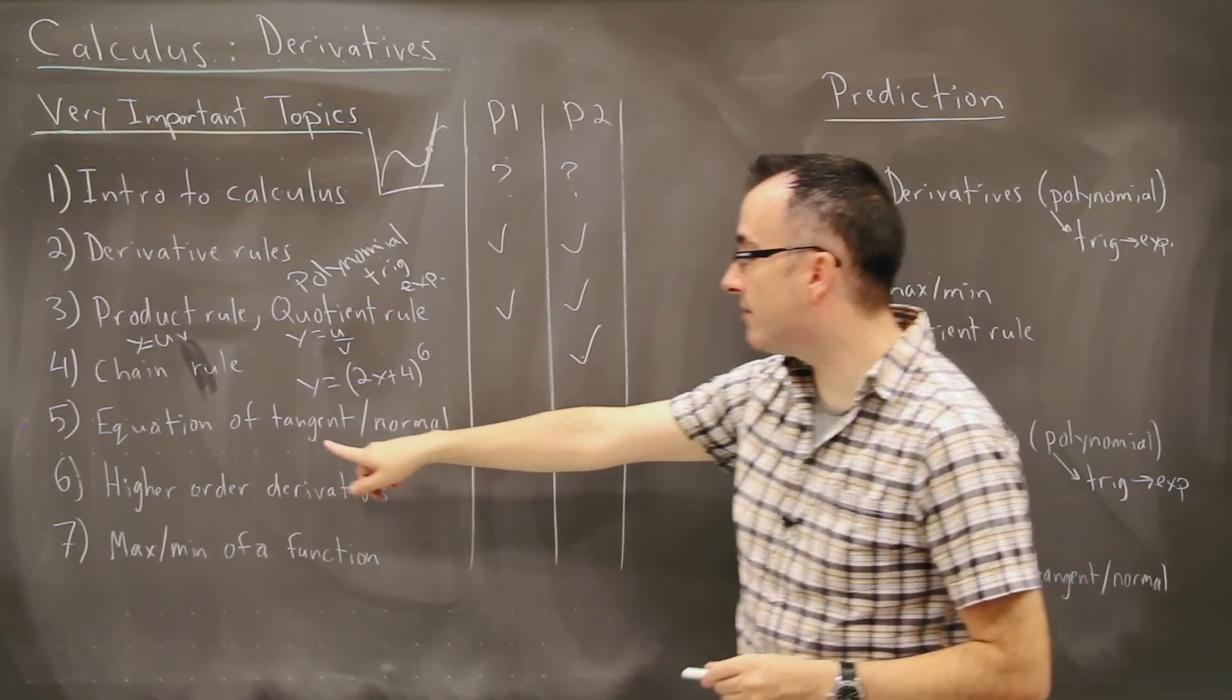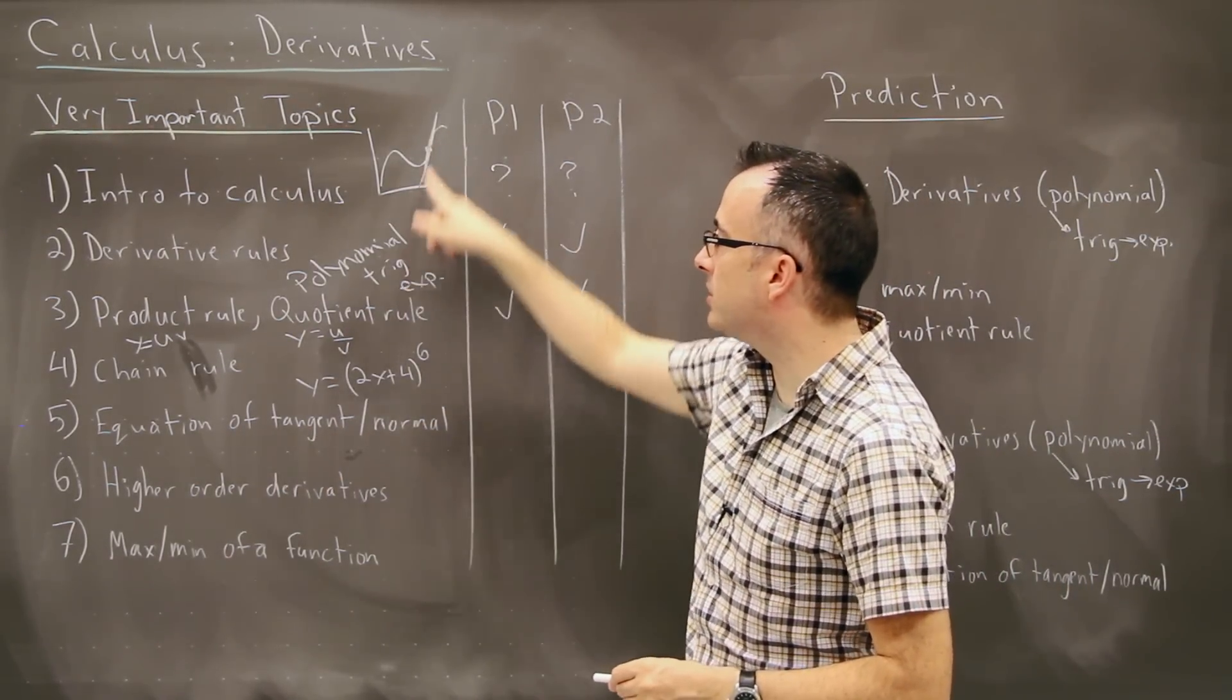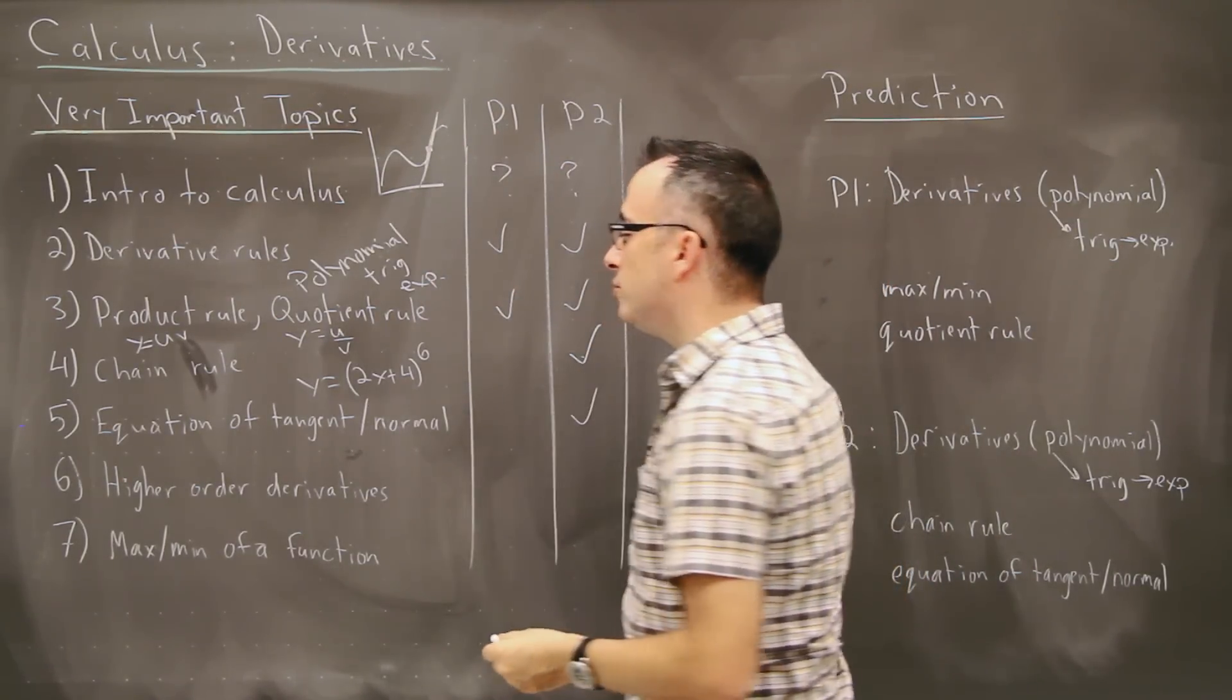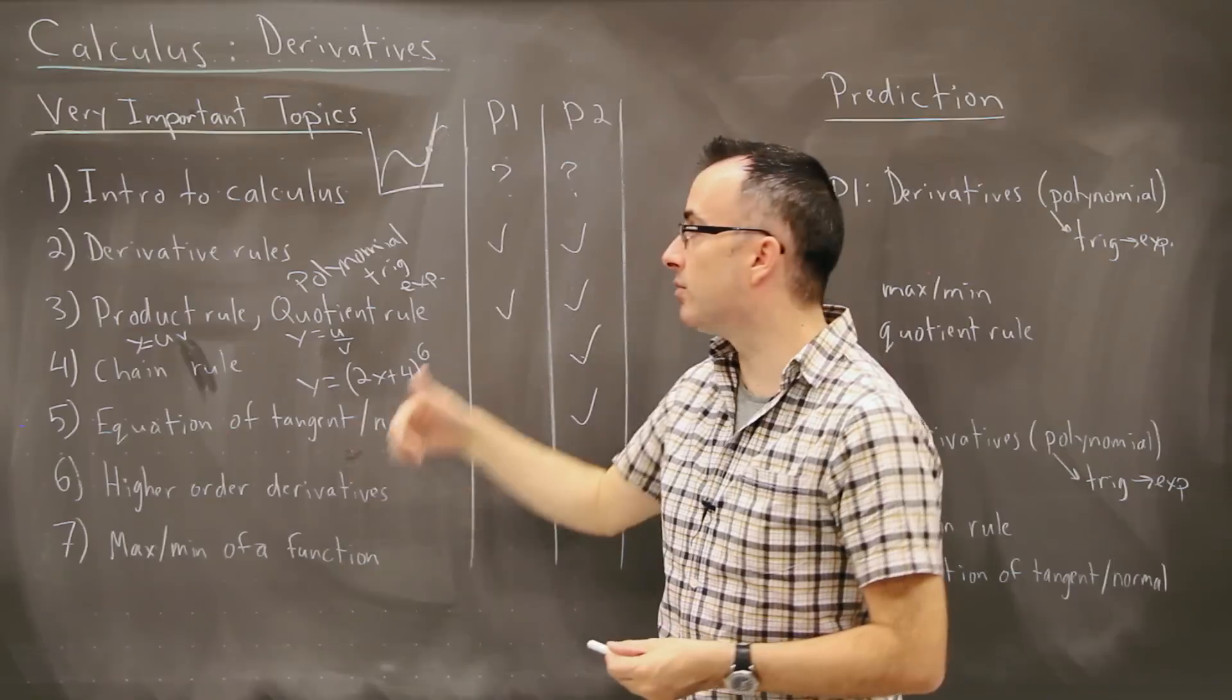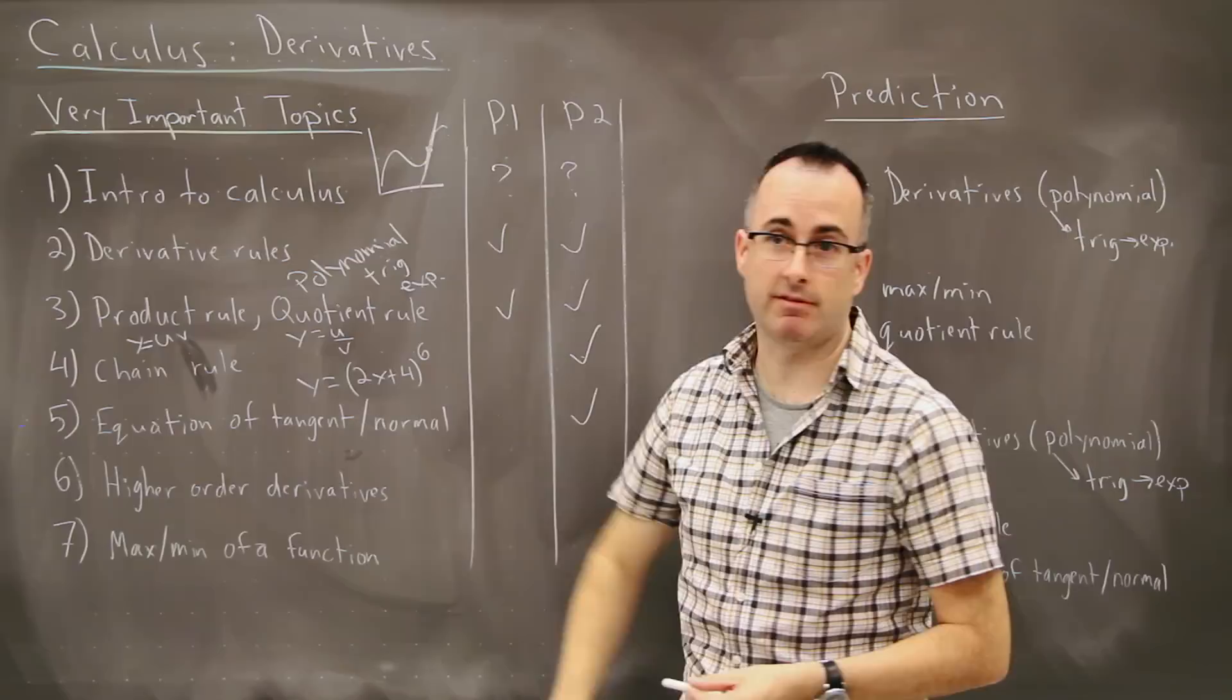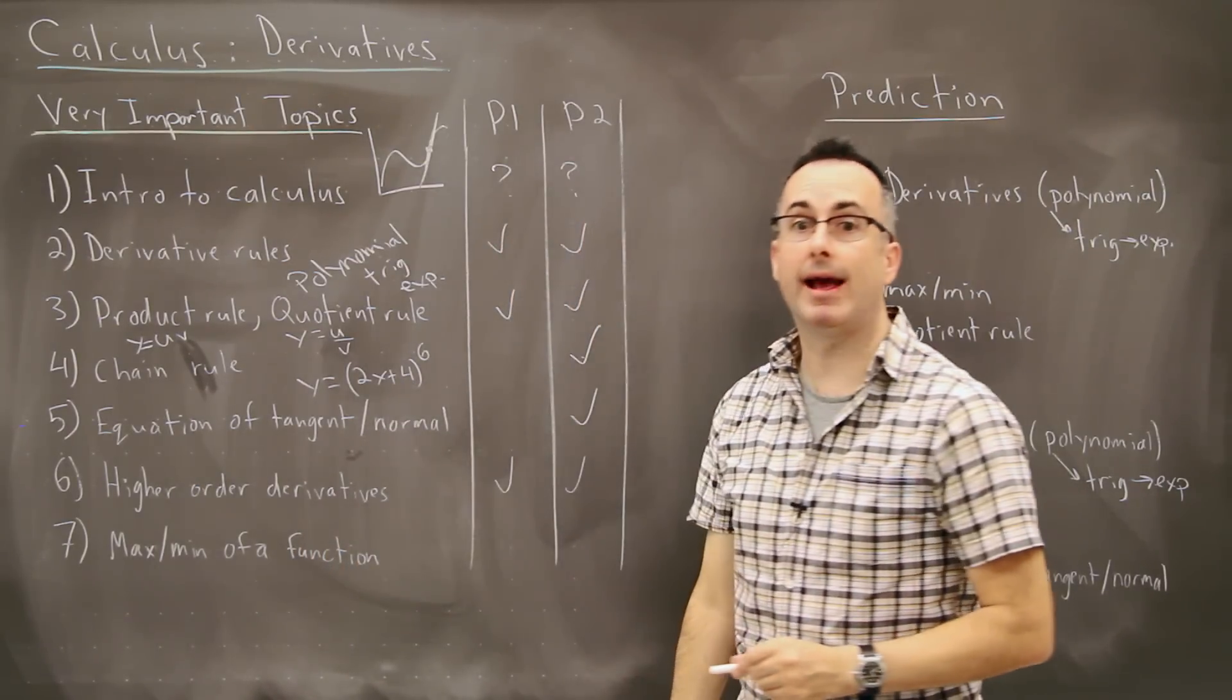Next we have equation of a tangent or normal. This is when we're trying to find the total equation for this linear graph here. This shows up very often on paper two. We have something called higher order derivative. This is like second derivative. In other words, the derivative of the derivative. Or even the third or the fourth derivative. And those show up pretty evenly weighted between paper one and paper two.